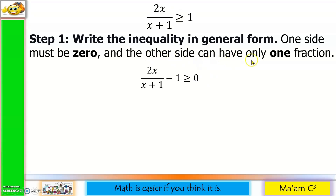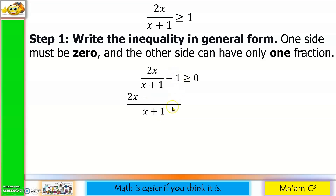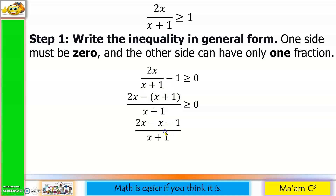The other side can have only one fraction, so we have to simplify. The LCD is x plus 1. x plus 1 divided by x plus 1 is 1, times 2x is 2x. Minus: x plus 1 divided by 1 is x plus 1, times 1 is still x plus 1. Make sure you enclose that in parentheses. Greater than or equal to 0. Distributing gives 2x minus x minus 1, all over x plus 1, greater than or equal to 0.